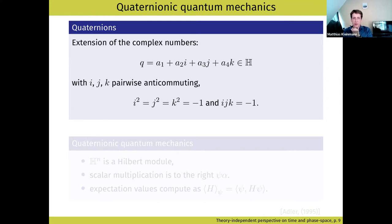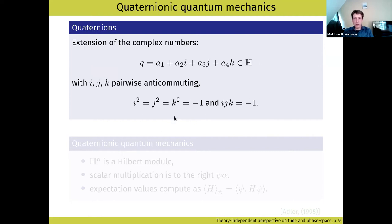Quaternions are an extension of complex numbers representing a four-dimensional real vector space. You have three imaginary units i, j, and k, which each square to minus one like complex numbers, but they do not commute — giving you a skew field. As a physicist, the easiest way to think about quaternions is as the Pauli matrices σ₀, σ₁, σ₂, σ₃, which satisfy exactly the same algebra. When Hamilton invented quaternions, matrices had not yet been invented, which is why the formulation looks different.